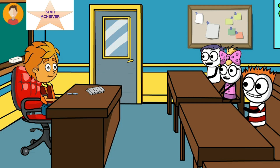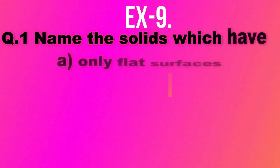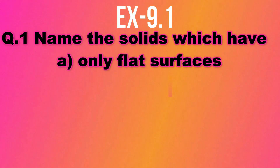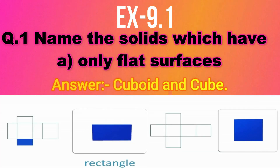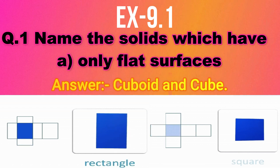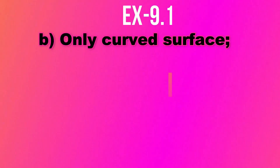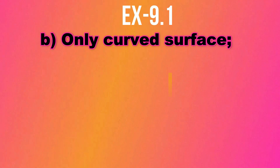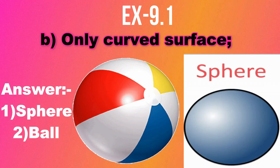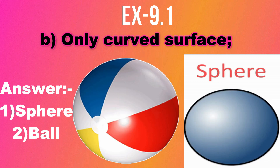Exercise 9.1, question 1: Name the solids which have only flat surfaces. The answer is cuboid and cube. As you can see in the animation, cuboid and cube have only flat surfaces. Now which solid has only a curved surface? Yes, it is nothing but a sphere — like a ball which is in the shape of a sphere. You can see that a sphere or ball has only a curved surface.